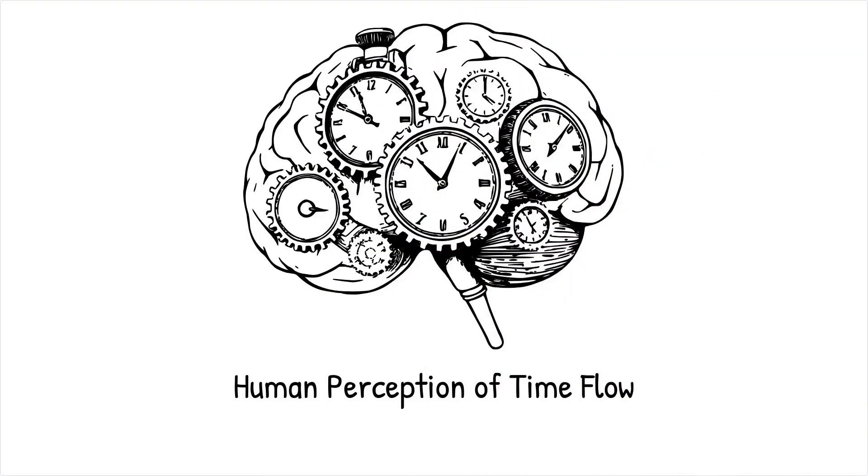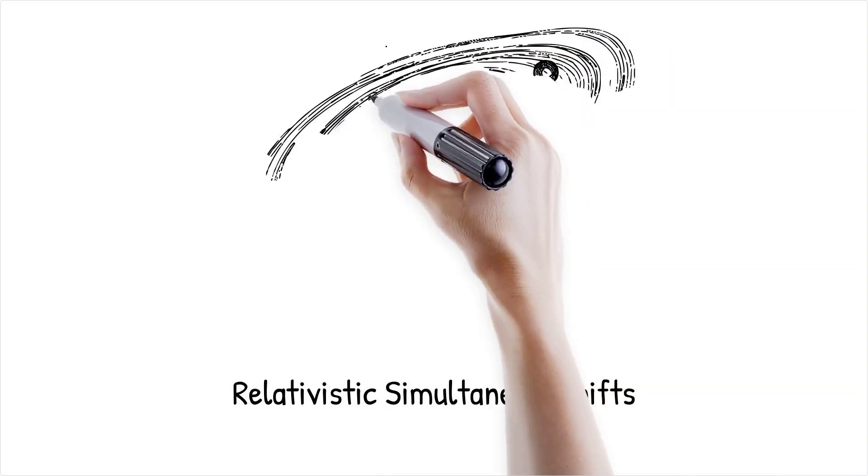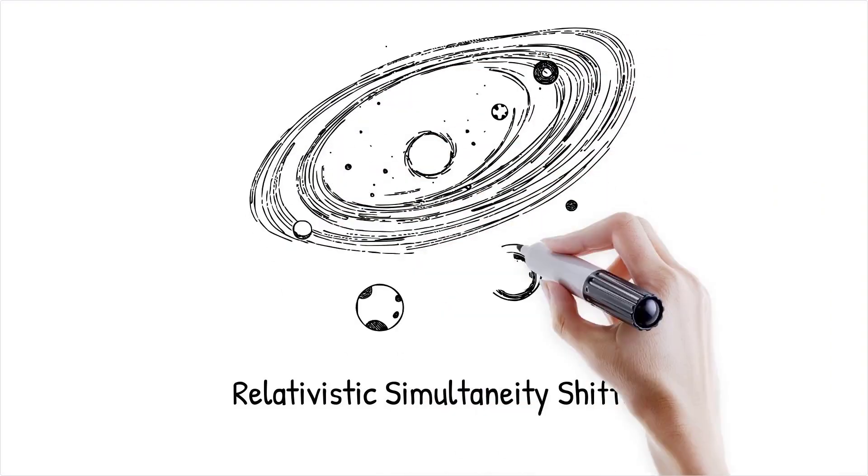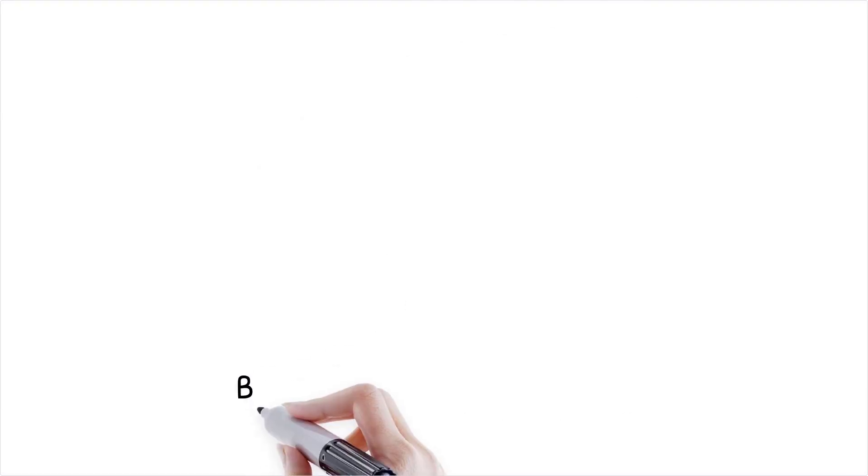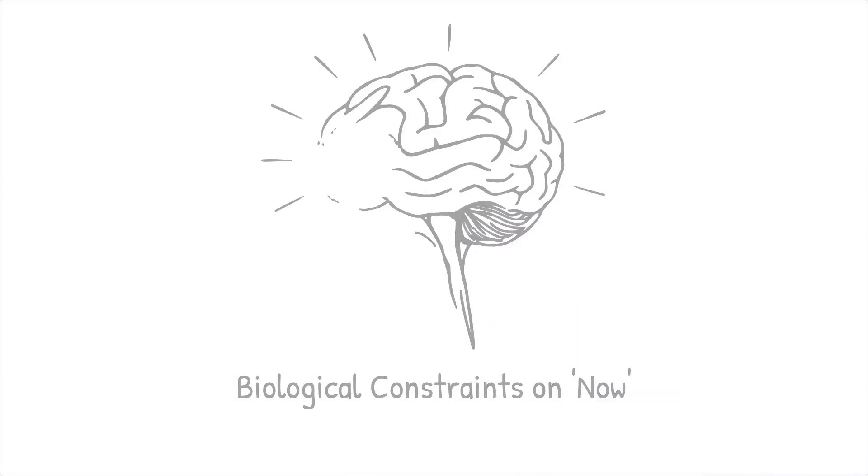Humans evolved to perceive time as a continuous flow, but relativity suggests that this is just an illusion created by our limited speed and sensory processing. If we could directly perceive relativistic simultaneity shifts, we would see distant galaxies not as fixed objects in space, but as dynamically shifting timelines. Our intuitive sense of 'now' is simply a product of our biological constraints.